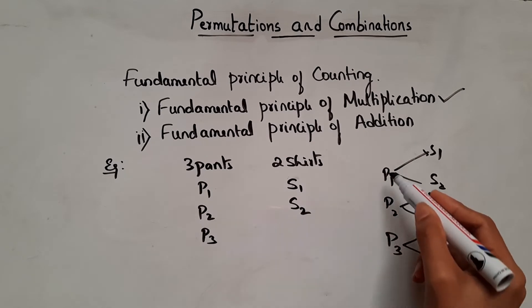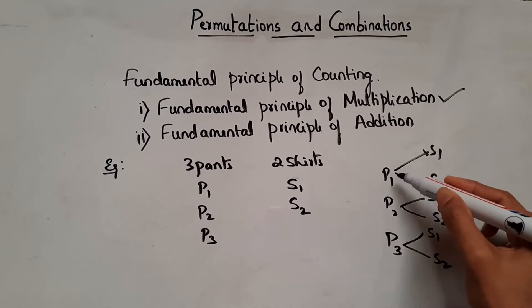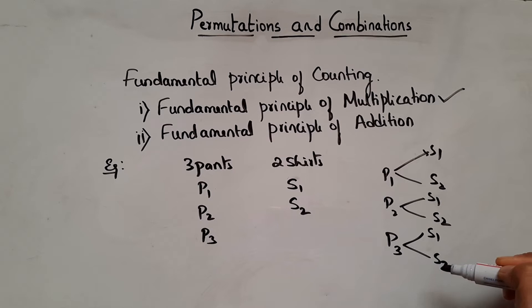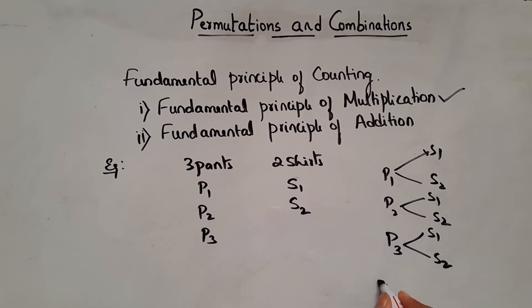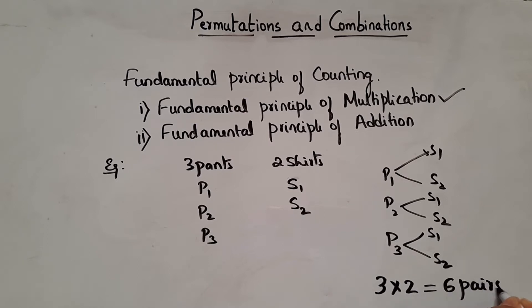So we can say for every choice of pants he has 2 choices for shirts. So that means 3 into 2, which is nothing but 6 pairs. So 6 pairs are possible.